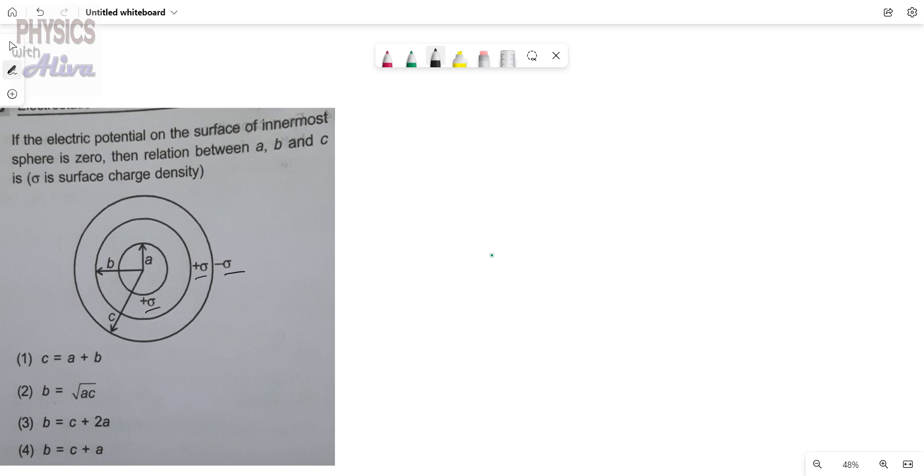That means for unit area the charge is sigma. Right, so the total charge on the surface, on the sphere A, suppose this is sphere A, this is sphere B and this is sphere C.